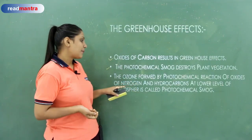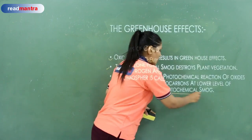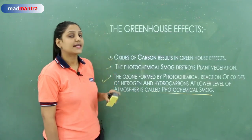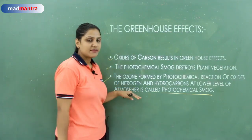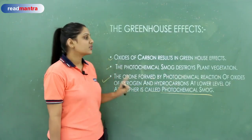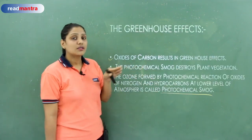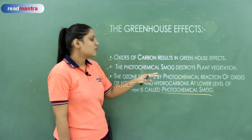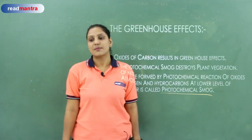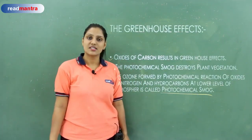The ozone formed by photochemical reactions of oxides of nitrogen and hydrocarbons at the lower level of the atmosphere is called photochemical smog. When NO2 plus hydrocarbon acts under ultraviolet rays, photochemical smog is formed. So there are two types of smoke — London/classical smoke and photochemical smoke. Both are dangerous — one is oxidizing and one is reducing, which you will study in the chemistry chapter.